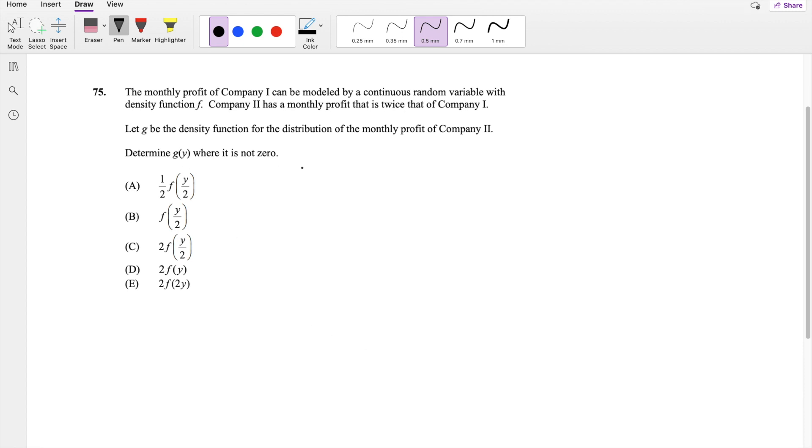So I'm going to say F of X is what represents company 1, and G of Y is what company 2 is. They say that company 2 has a monthly profit that is twice that of company 1. So that's basically the same thing as saying Y is equal to 2 times X.